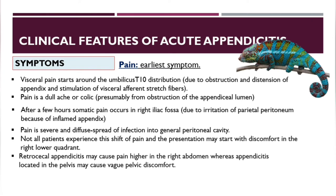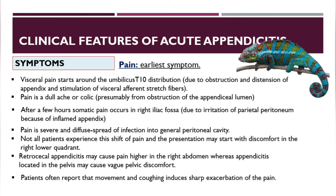Retrocecal appendicitis may cause pain higher in the right abdomen, whereas pelvic appendicitis may cause vague pelvic discomfort. Patients often report that movement and coughing induce sharp exacerbation of pain, so they usually lie in one position.